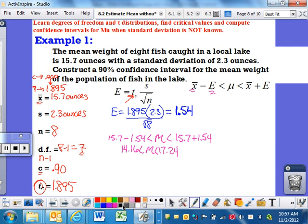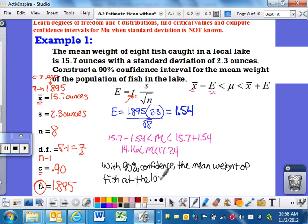So all I'm doing is taking my x bar, which is 15.7, and then subtracting the error and adding the error. And when you calculate these, you end up getting 14.16 to 17.24. There is my confidence interval. Now in every section in this chapter, we need to start writing, what does that mean? So what are the three things I want?